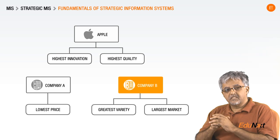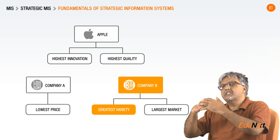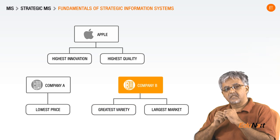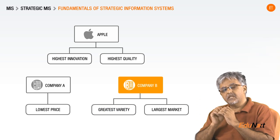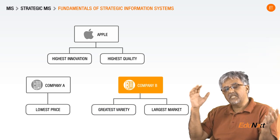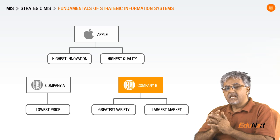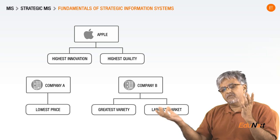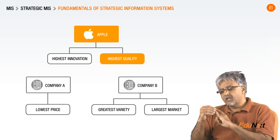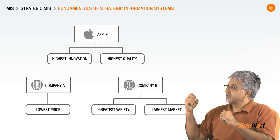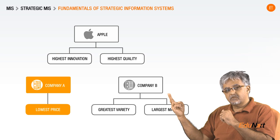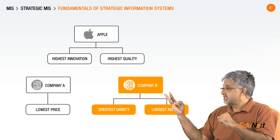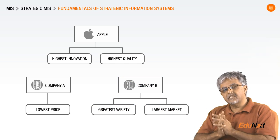Yet another organization's strategy might be to deliver the greatest variety of products. Apple, for instance, delivers only a few kinds of products, whereas another company might deliver many different kinds of products and serve the largest number of markets. So we have three different strategies: high quality and high innovation; low cost; and great variety serving a large number of markets.